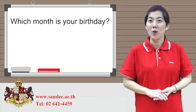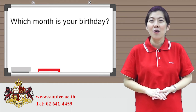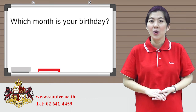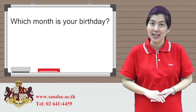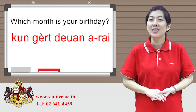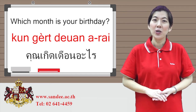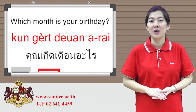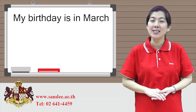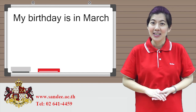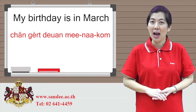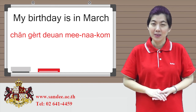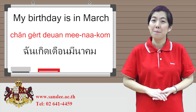Let's use the words in a sentence. For example, someone will ask you: which month is your birthday? Kuhn keert deuen aray? And you can answer: my birthday is in March — Chann keert deuen minakom.